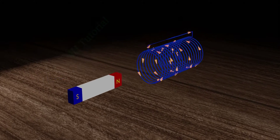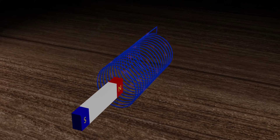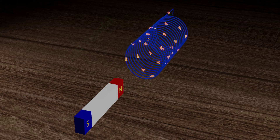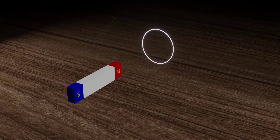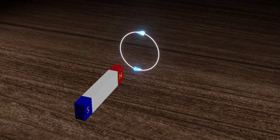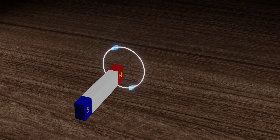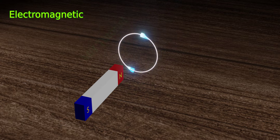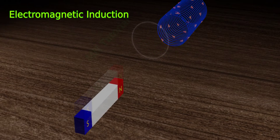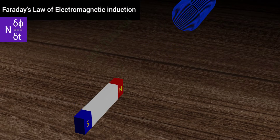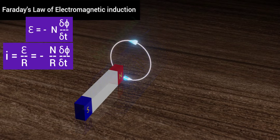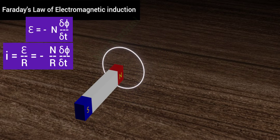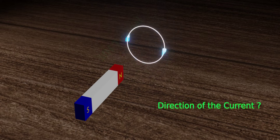If you move an electric loop, or a solenoid, near a magnet, an instantaneous potential difference, or an instantaneous electric current, generates throughout the loop or solenoid. This incident is called electromagnetic induction. You can measure the amount of current by using Faraday's law of electromagnetic induction. But what about the direction of the induced current?